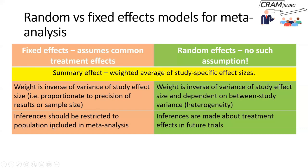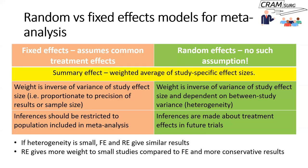So in random effects modeling you take into account not only sample sizes but also the heterogeneity between studies. When you are doing fixed effects modeling, the inferences you make should be restricted to the population included in your systematic review and meta-analysis.